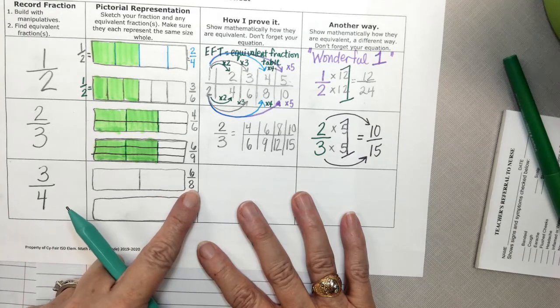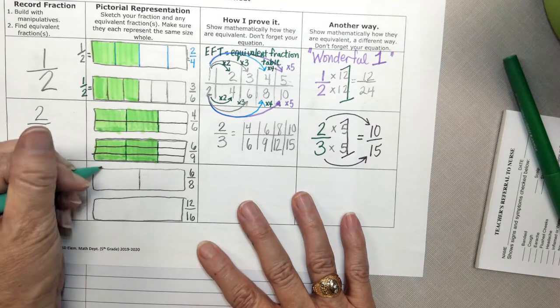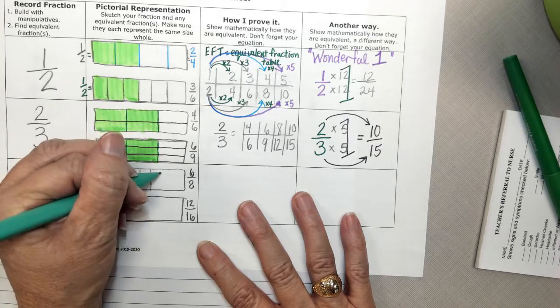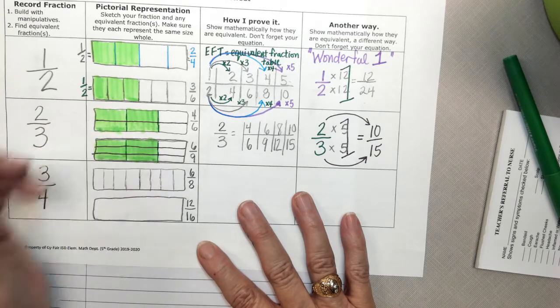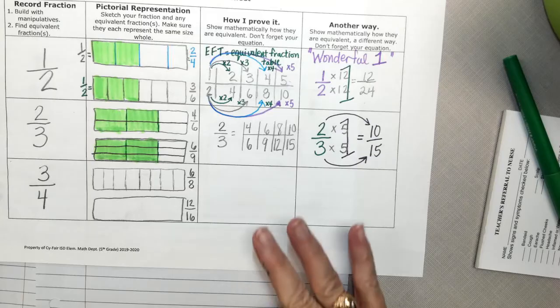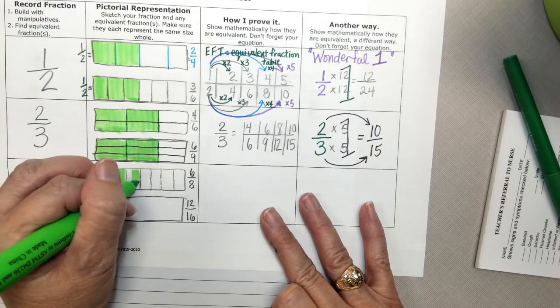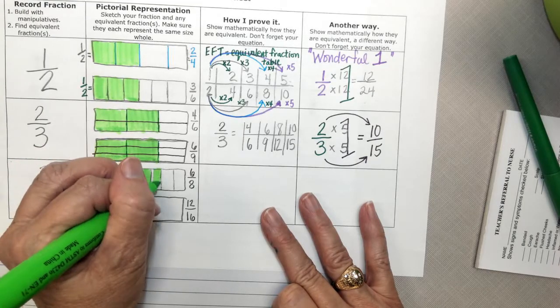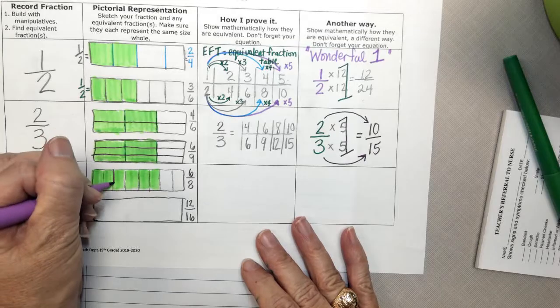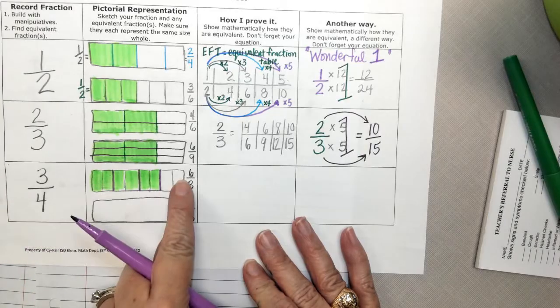So, if my denominator is 8, I need how many equal pieces? 8. So I need 4 on each side. 1, 2, 3, 4. 1, 2, 3, 4. And I'm going to shade in how many pieces? 6. 1, 2, 3, 4, 5, 6.